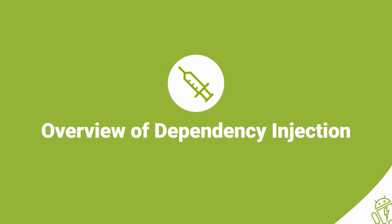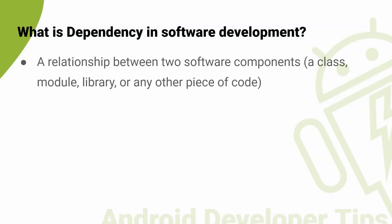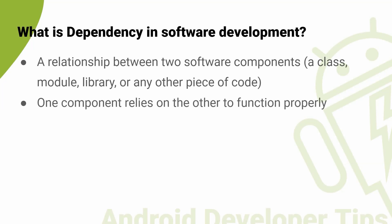Let's start with a high-level overview of what dependency injection is and how it can be used in Android application development. In software development, a dependency refers to a relationship between two software components, where one component relies on the other to function properly. A software component can be a class, module, library, or any other piece of code that provides some functionality to the application.